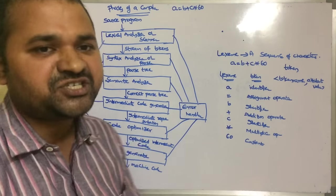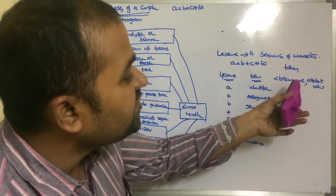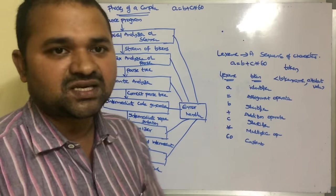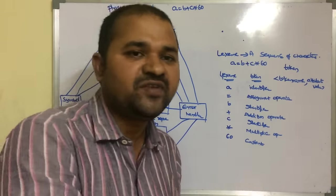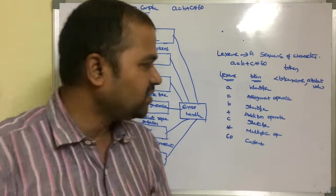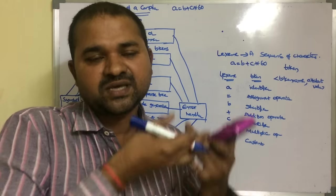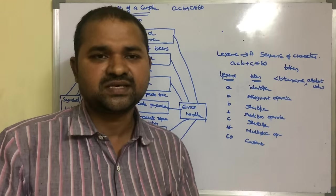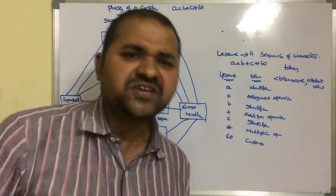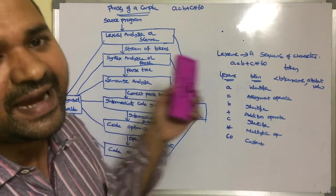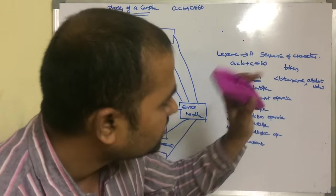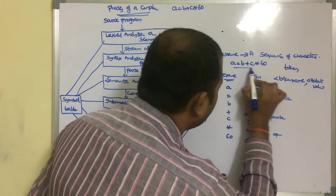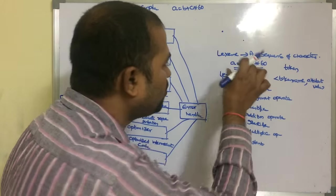The symbol table is a data structure which contains information about the token, such as variable name, its value, scope of the variable (whether it is local or global), where it can be used, and if subroutines are used — the return type of the function, name of the function, number of arguments, and order of arguments. So the symbol table is a data structure which contains information about identifiers.